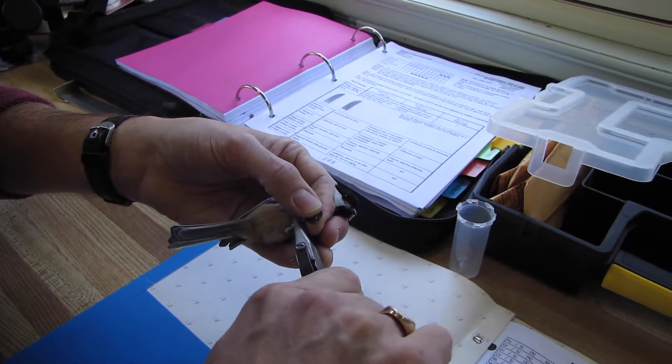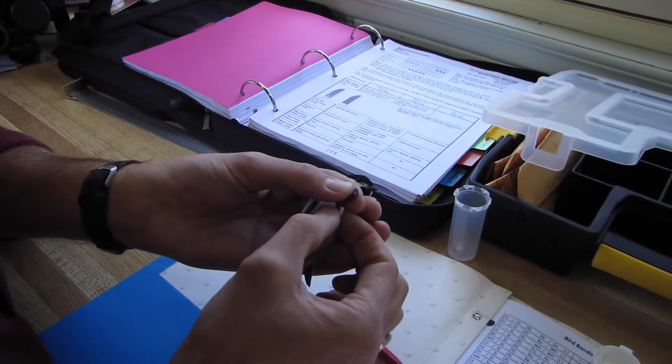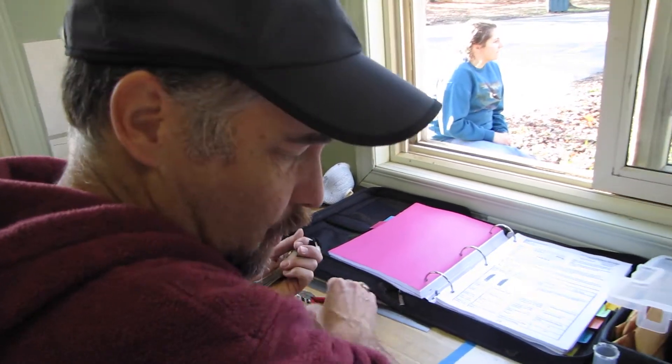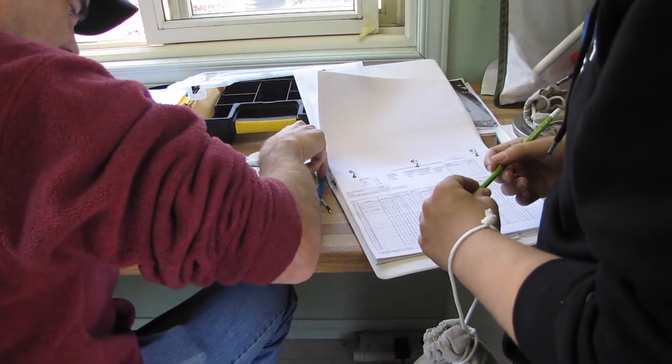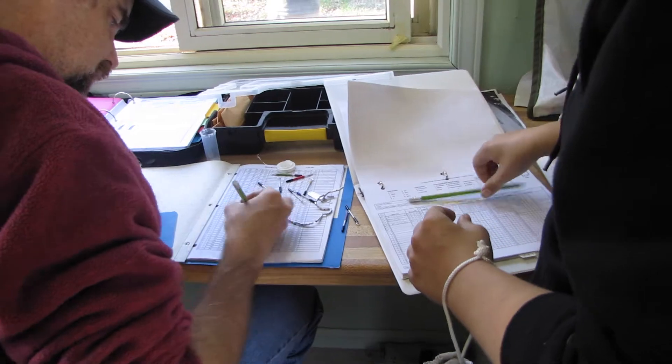Rotate it a little bit. Shut it again. Make sure there's no seam. There we go. So this guy is already banded. Now we're going to color band him or her. And this is going to be green over silver, green over blue.